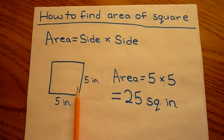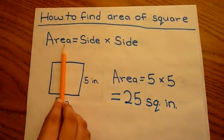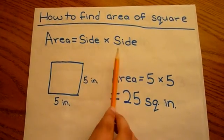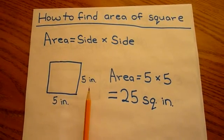For this example, it's a square. The formula for the area is side times side. All the sides in a square are equal length.